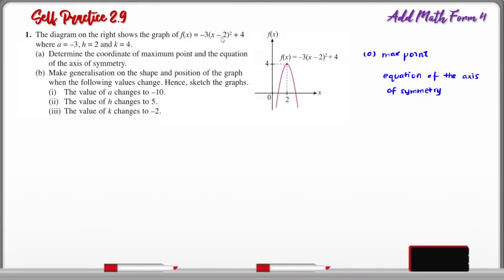Question number one. The diagram on the right shows the graph of the function f of x. Part a determines the coordinates of the maximum point and the equation of the axis of symmetry. The point at the top here is the maximum point, with coordinates x equals 2 and y equals 4. So the maximum point coordinate is (2, 4). The vertical straight line that passes through the maximum point is the axis of symmetry. Therefore, the equation is x equals 2.